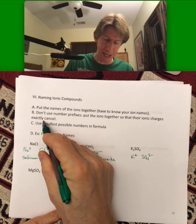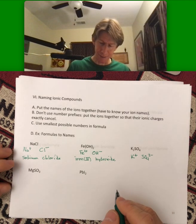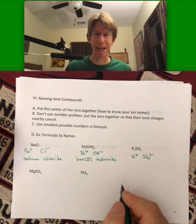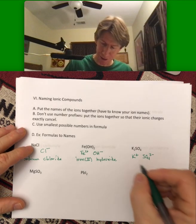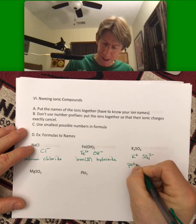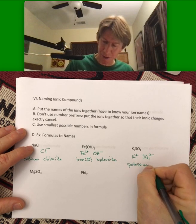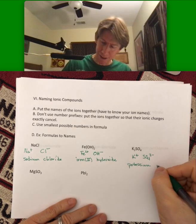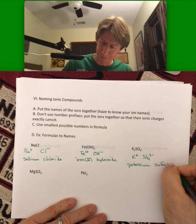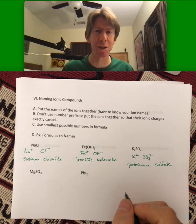Put the ions together so that their ionic charges exactly cancel. And when you have the formula working back to the name, that's a little easier to see. We'll use that next page, too. So, it's the name of the element is potassium, the name of the ion is potassium, and then the polyatomic sulfate, which is one of the more common ones.